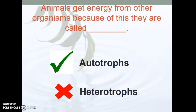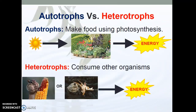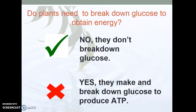Heterotrophs it is. So plants can get their energy from the sun. They need glucose to obtain energy. Animals need glucose to obtain energy, and there are help videos in the content to help you out. Do plants need to break down glucose to obtain energy? Yes. They make that glucose, but they still have to break it down to use ATP.